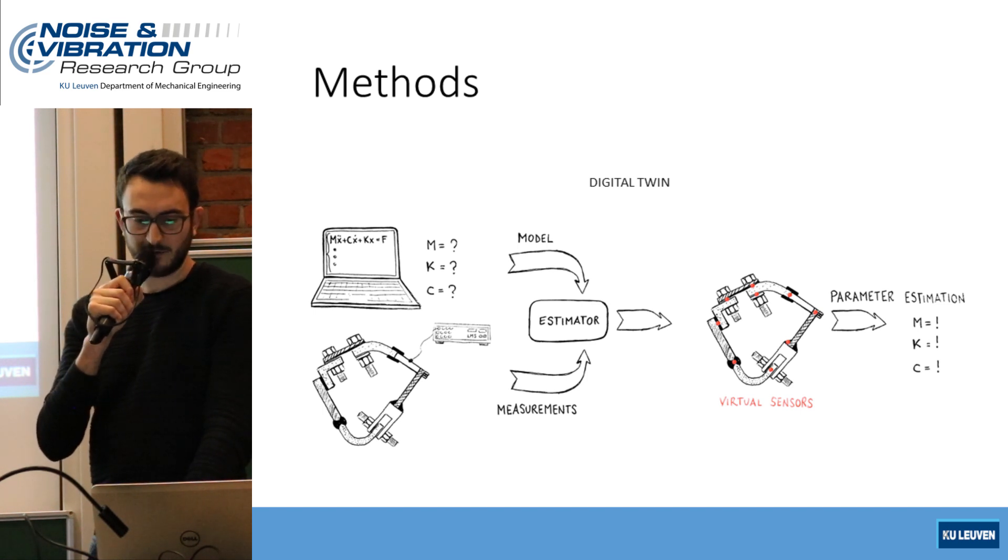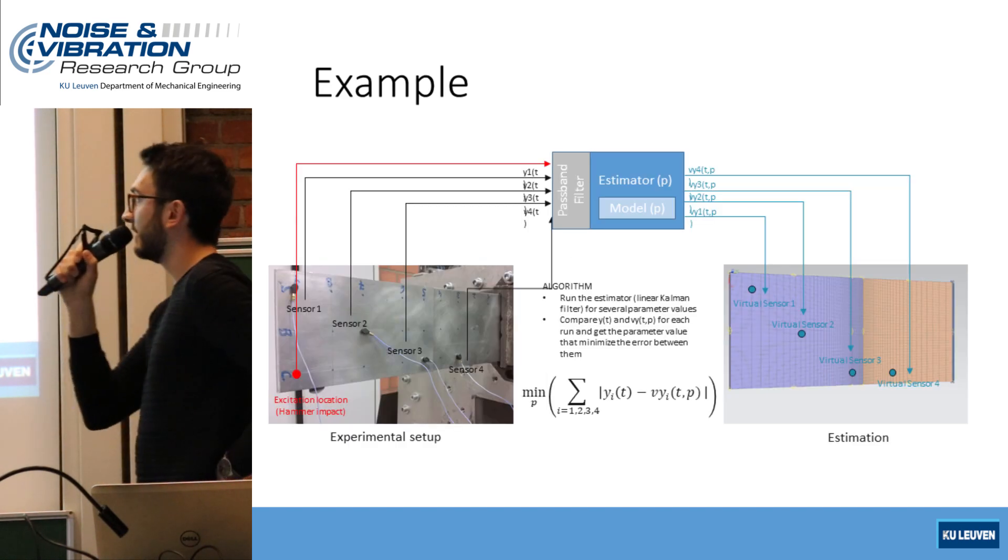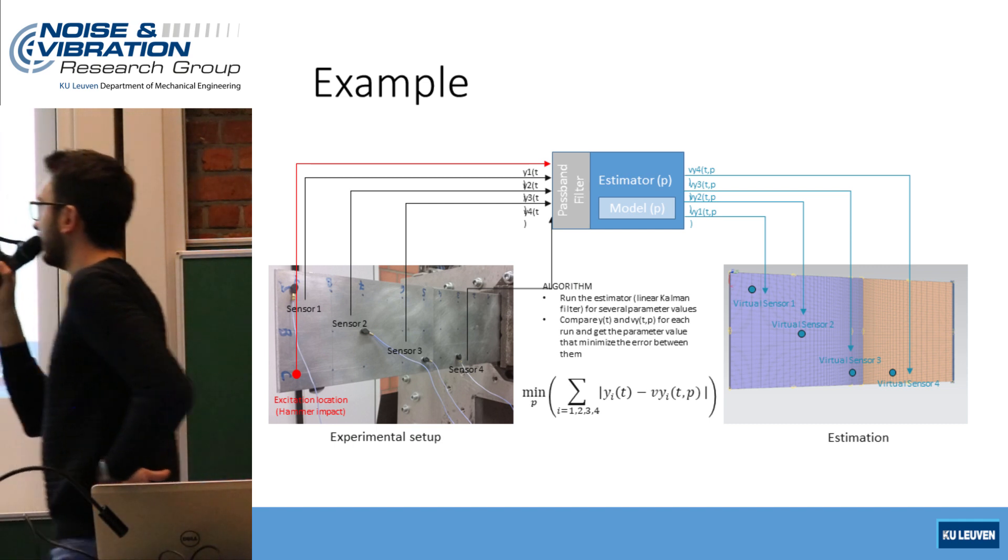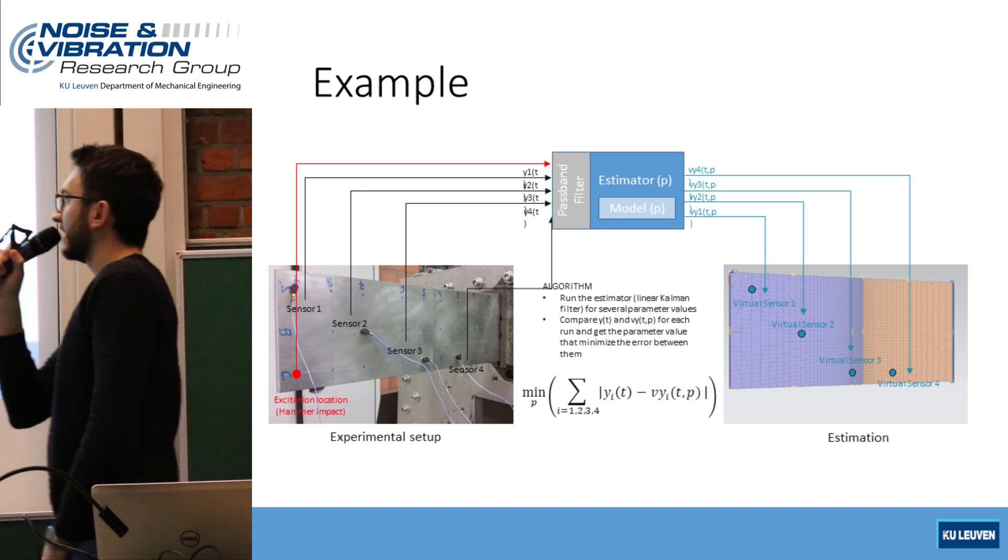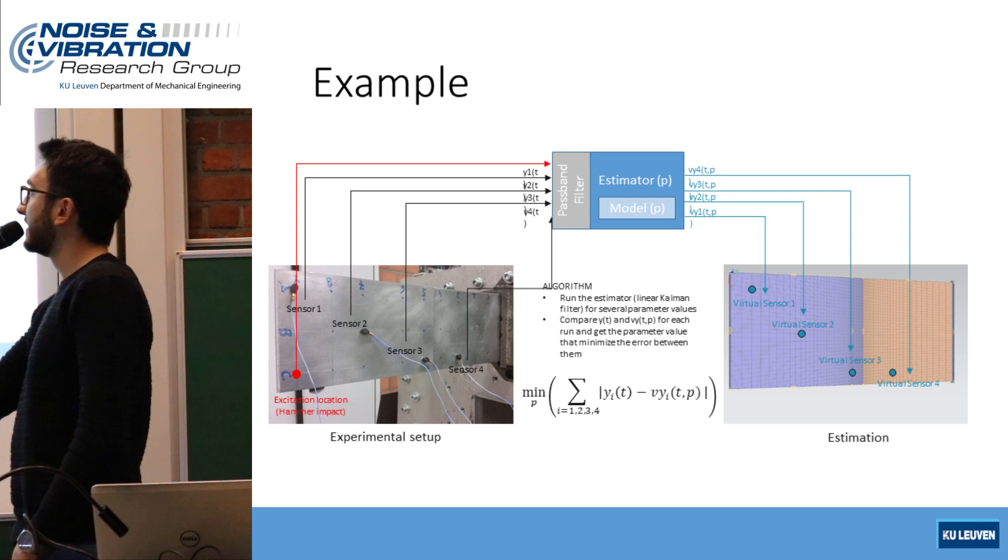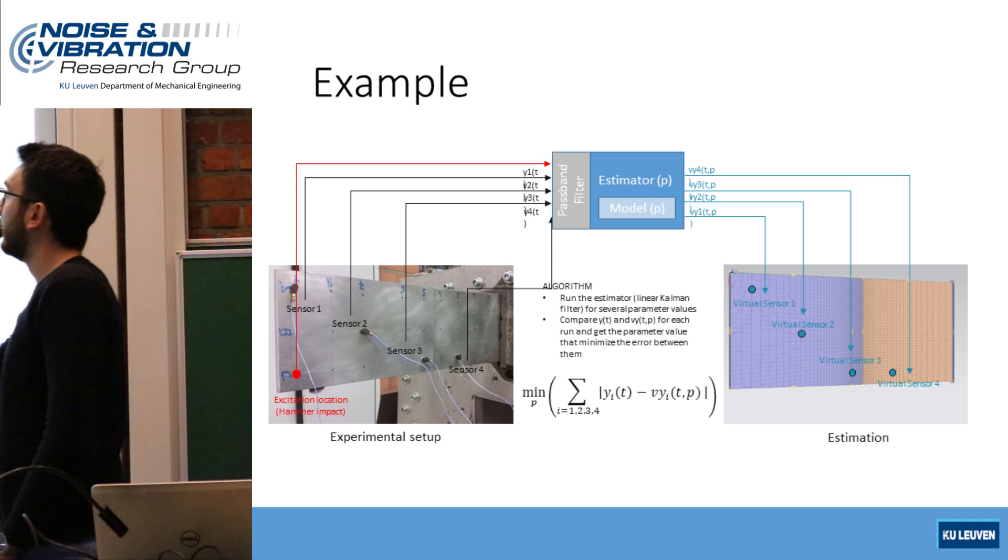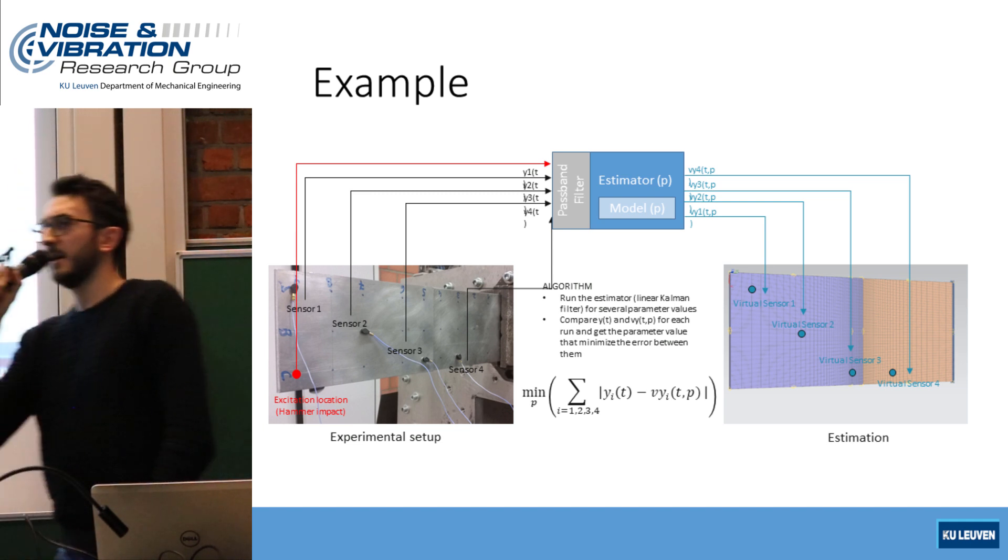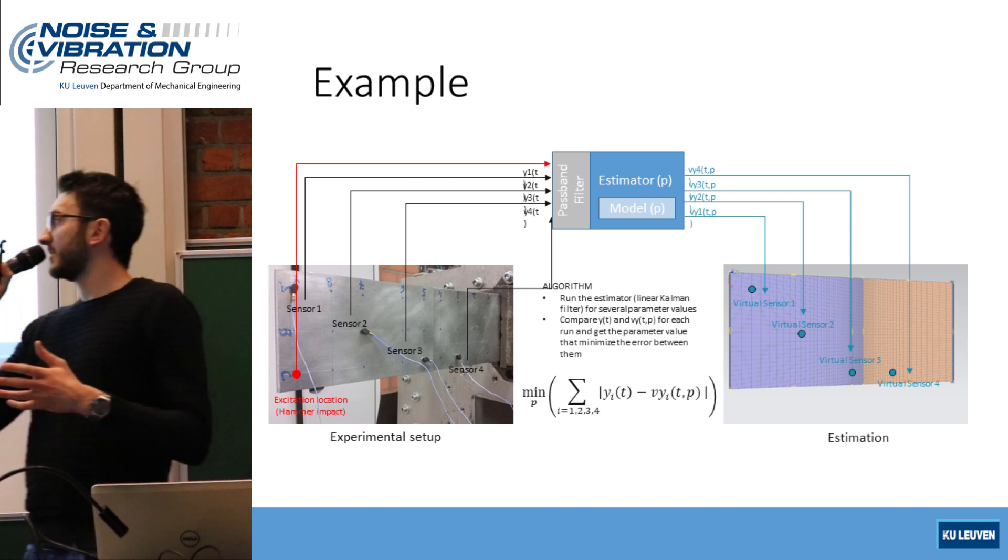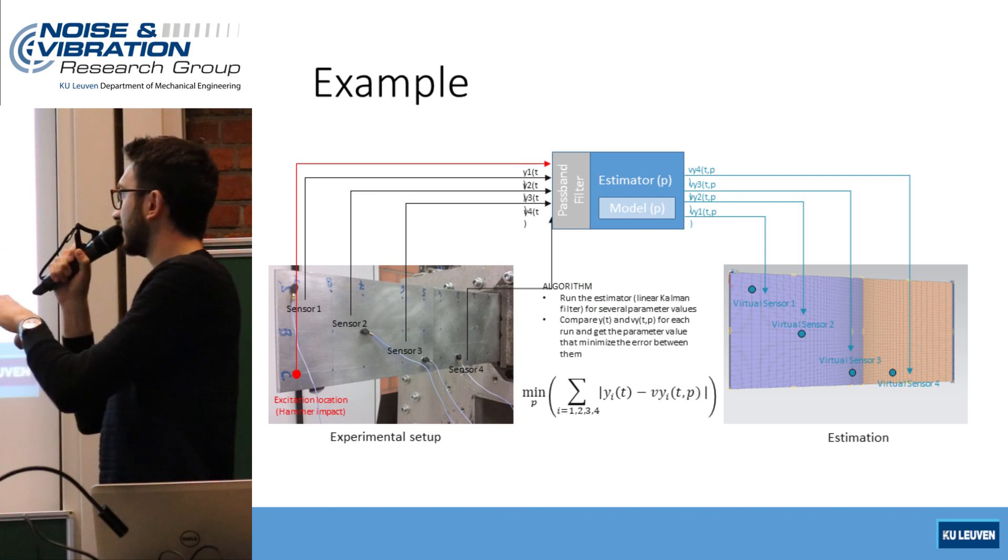Finally, we see an example of parameter estimation in which the system that I am investigating is a clamped system of two plates that are adhesively bonded together. The test rig is equipped with four accelerometers. The signals from the accelerometers are given to an estimator. The estimator in this case is a linear Kalman filter that gives us an output for virtual sensors matching with the real ones.